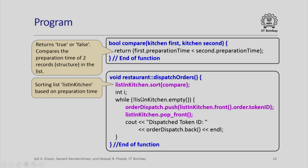All that we now need to do is that once list_in_kitchen is sorted, as long as it is not empty, I keep pushing the order.token_id from the sorted list obtained by using this sort statement. One by one the orders will be sent to dispatch, pushed out, and that is the end of this function.